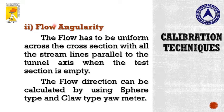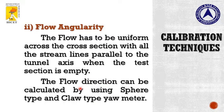The next measurement is flow angularity, or flow direction. For flow angularity we need two devices called sphere-tip probe and cobra probe. These will be placed in your test section when the model is not there. We have to keep the test section empty while doing all calibration, whether it is force measurement, flow direction measurement, or turbulence measurement — you do not keep your model in the test section during calibration. Flow direction parallel to the tunnel axis will be measured using the sphere-tip and cobra probes.